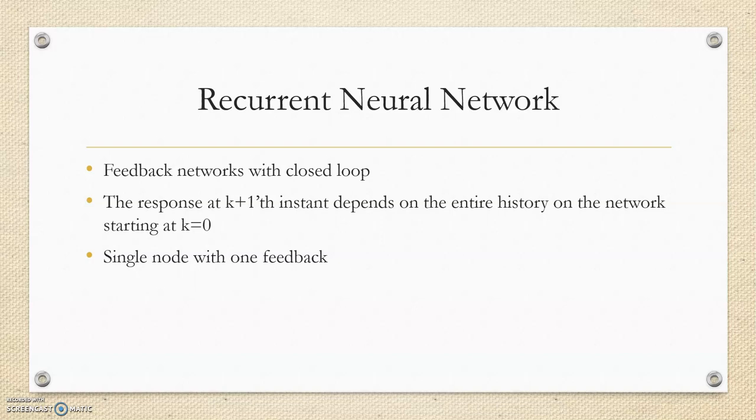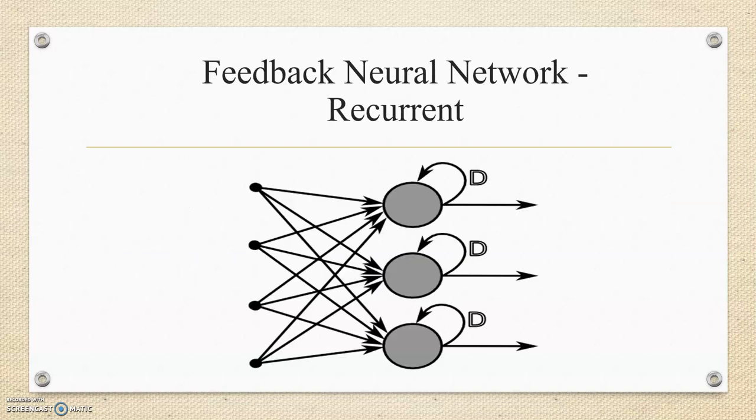The recurrent neural network can be single node with owned feedback, competitive nodes where the nodes are interconnected, single layer recurrent networks and multilayer recurrent networks. This diagram is an example of single node with owned feedback.